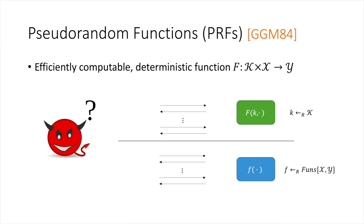We're all probably familiar with this concept already. A pseudorandom function, or PRF, is an efficiently computable deterministic function that has some associated key space, an input space, and an output space.